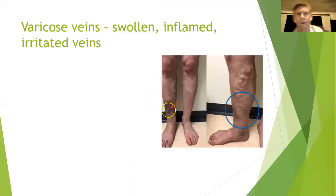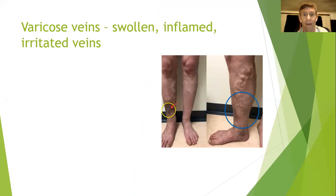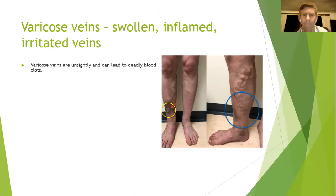The next topic is varicose veins - or as the speaker says to patients, 'very cross veins.' These are swollen, inflamed, and irritated veins seen regularly in practice. The pictures shown are comparatively mild to some cases encountered. Varicose veins are unsightly but can also lead to deadly blood clots. When blood stops moving or slows down, it clots - and with a varicose vein, circulation is affected and blood can slow down or block up, which is where blood clots come from.